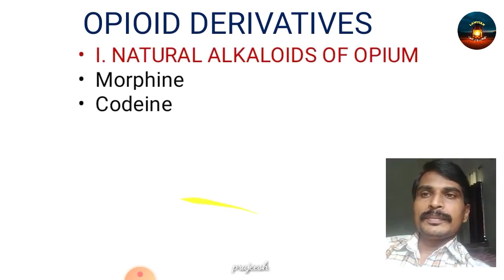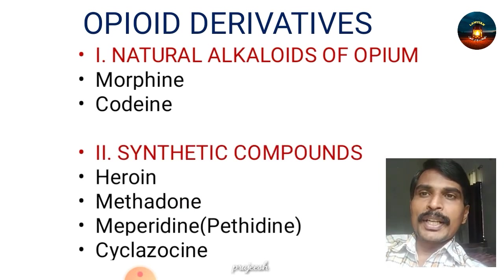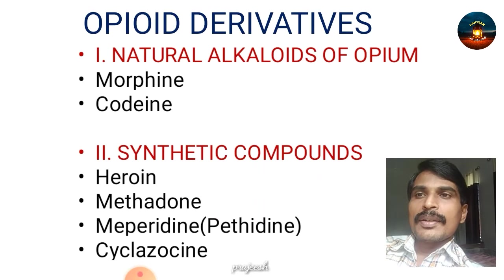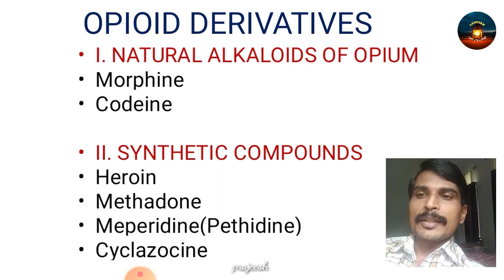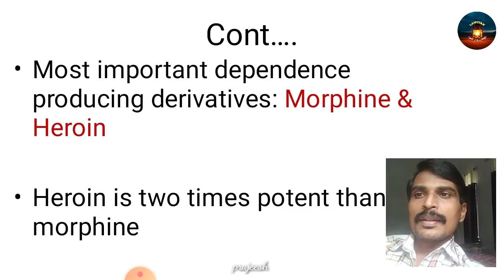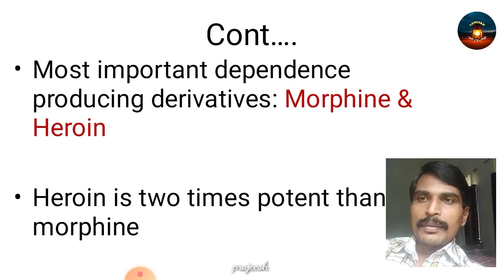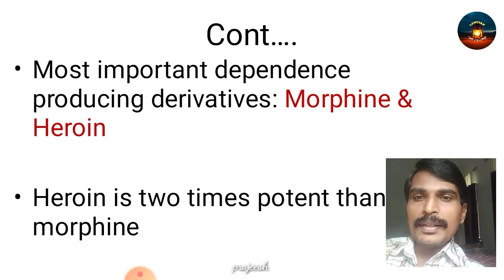Now we will see the opioid derivatives. These can be natural alkaloids of opium like morphine and codeine, and synthetic compounds like heroin, methadone, meperidine (that is pethidine), and cyclazocine. The most important dependence-producing derivatives are morphine and codeine.